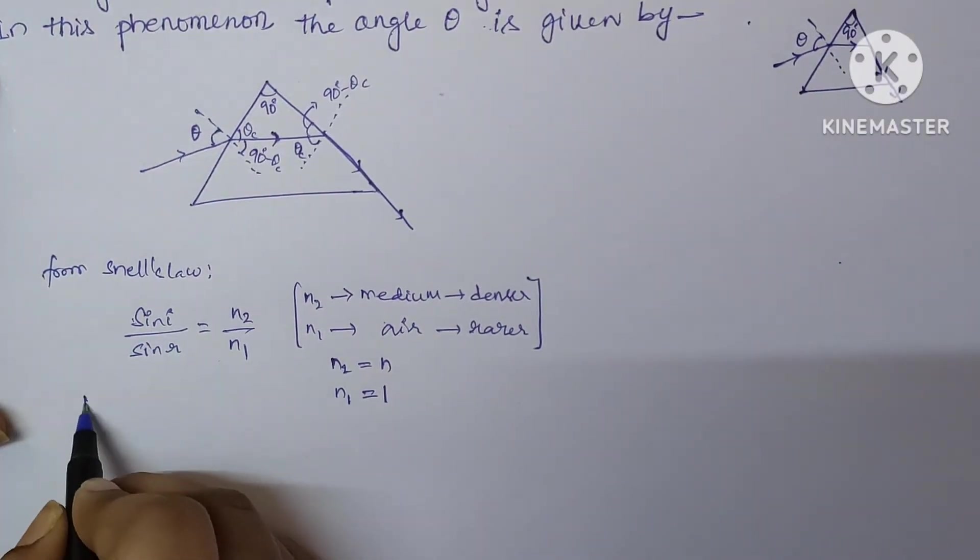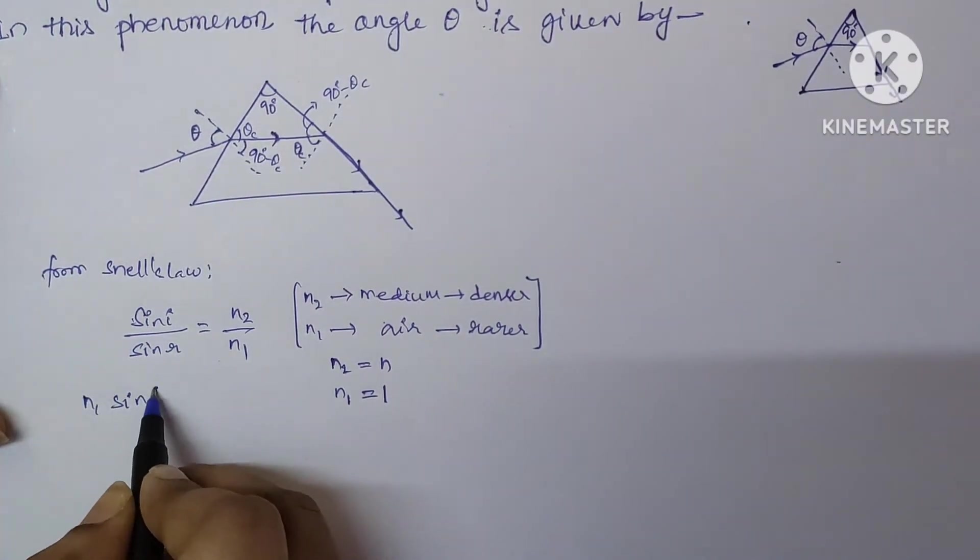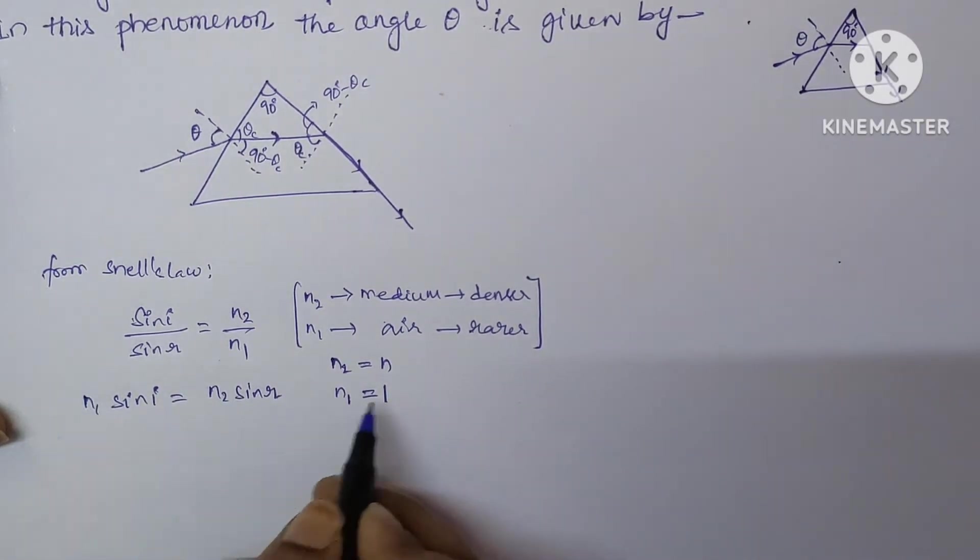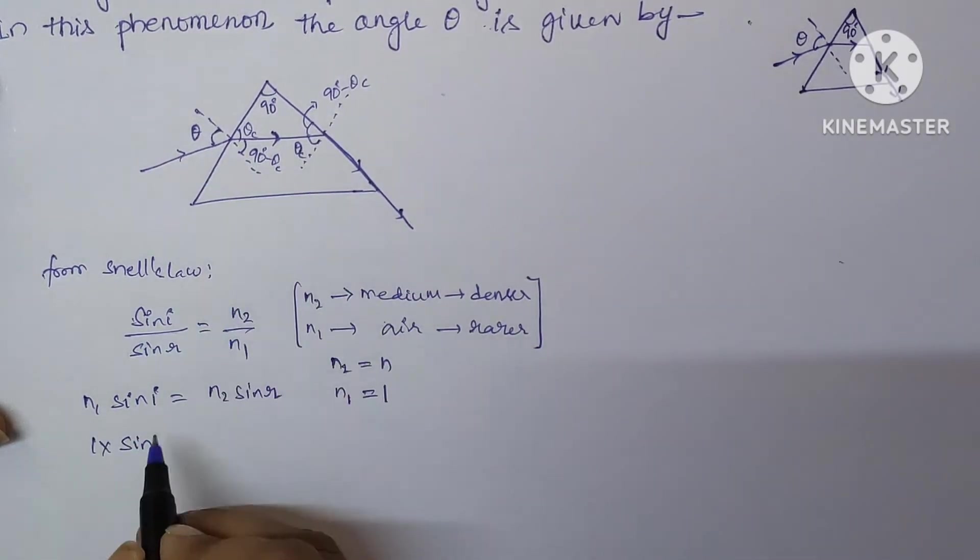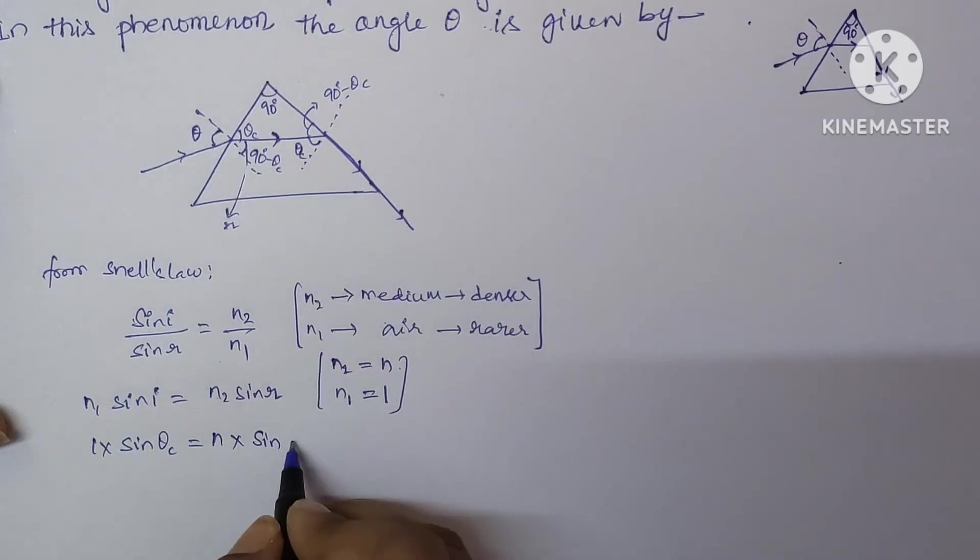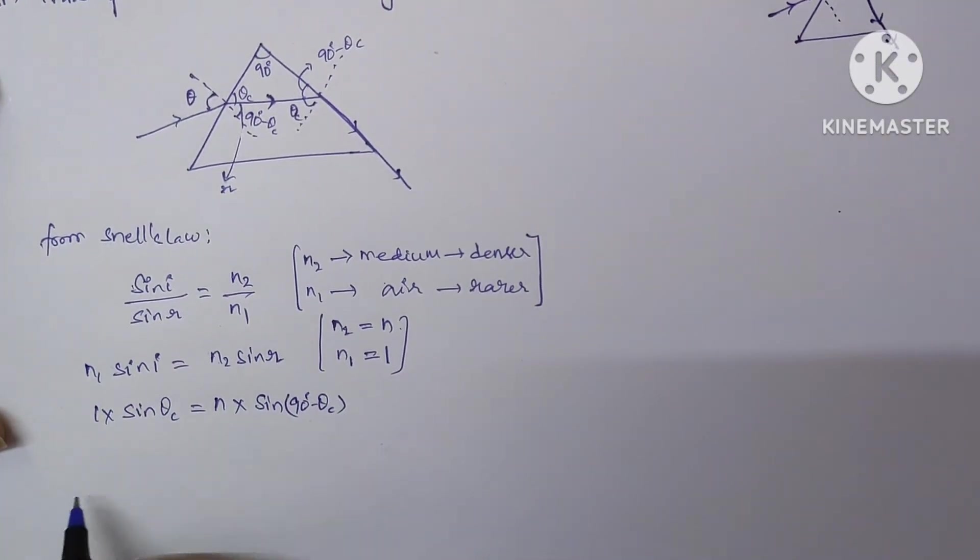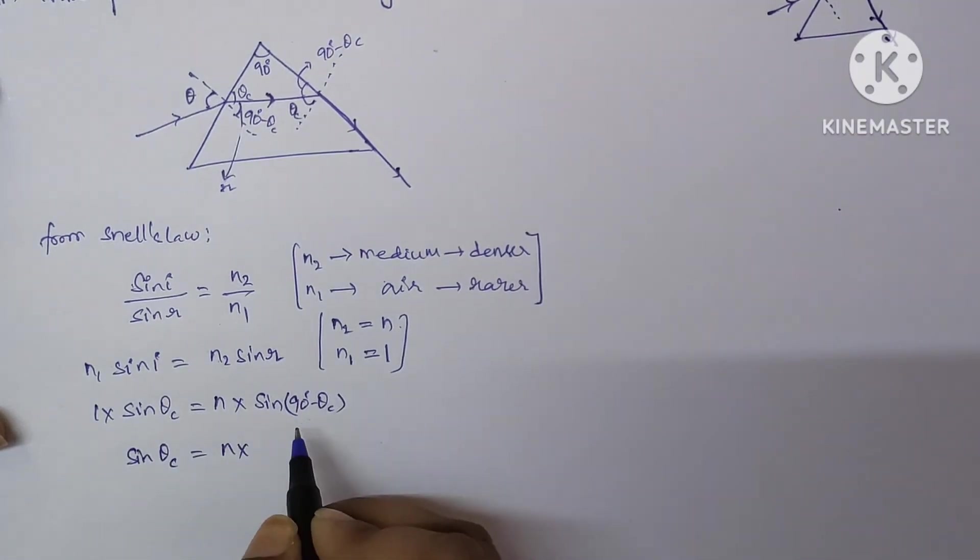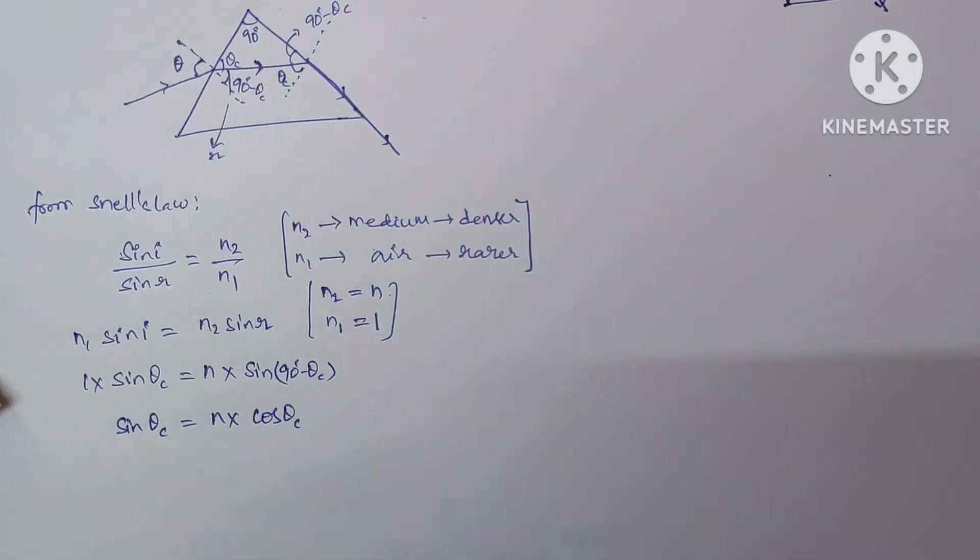Here let us consider N2 value is N and the refractive index of air is 1. Now, do the cross multiplication here. N1 sin i equal to N2 sin r. Here N1 value is 1, so 1 into sin, according to the given problem, I am replacing with theta c, which is equal to N2, let it be N. N into sin r, which is 90 minus theta c. For this incident angle, this is the refracted angle, 90 minus theta c. Sin i c is equal to N into sin 90 minus theta is cos theta. Here it is cos theta c. Let it be equation number 1.